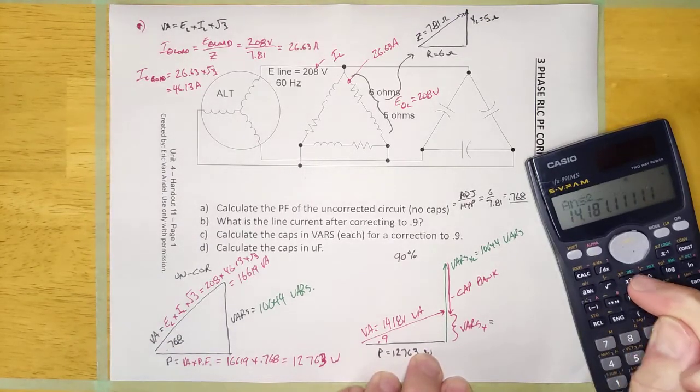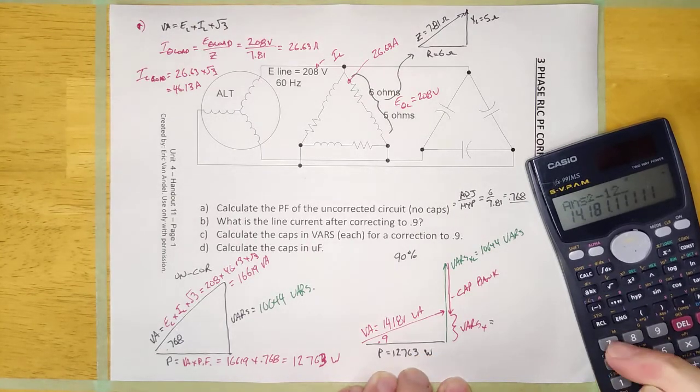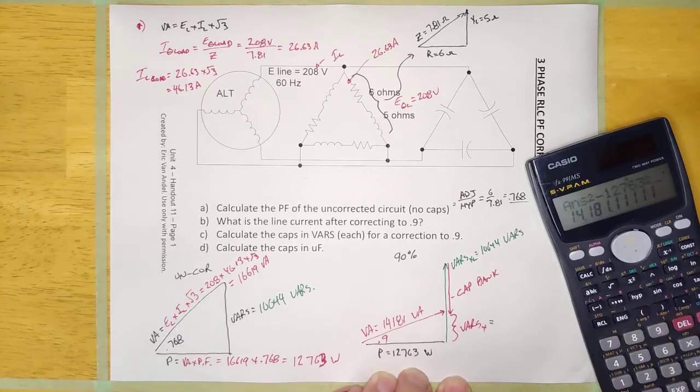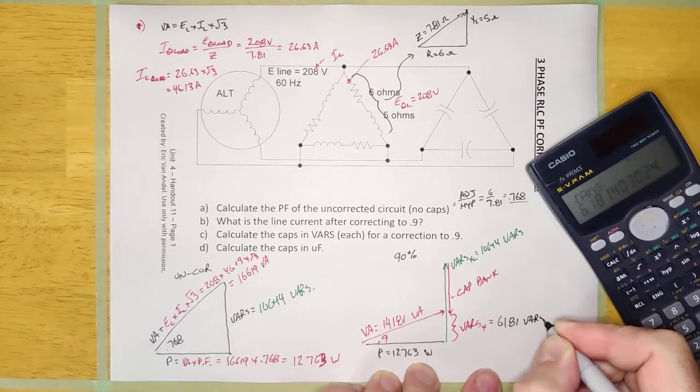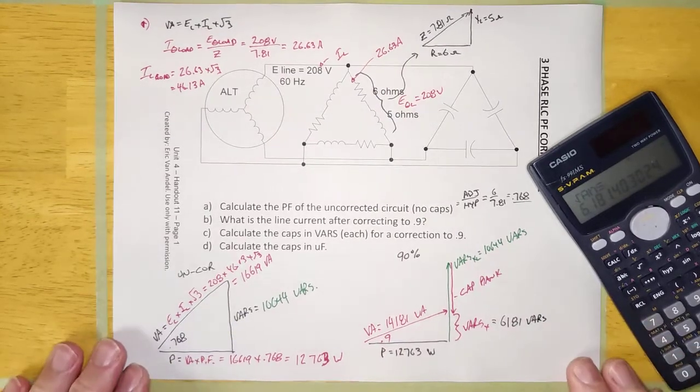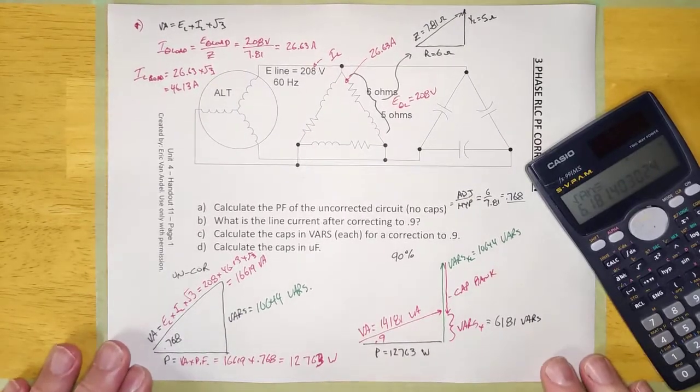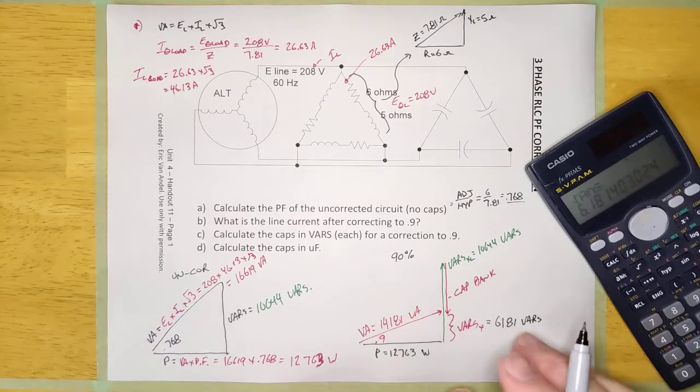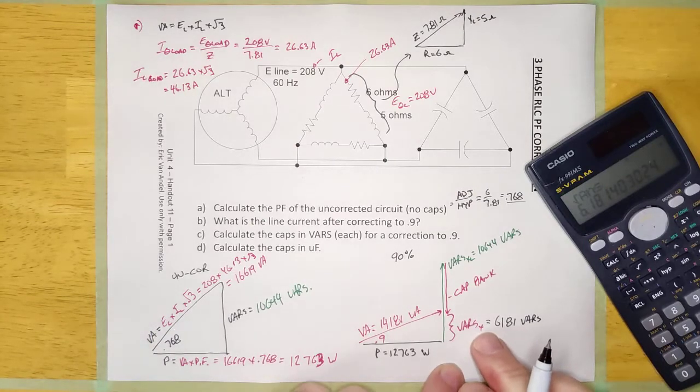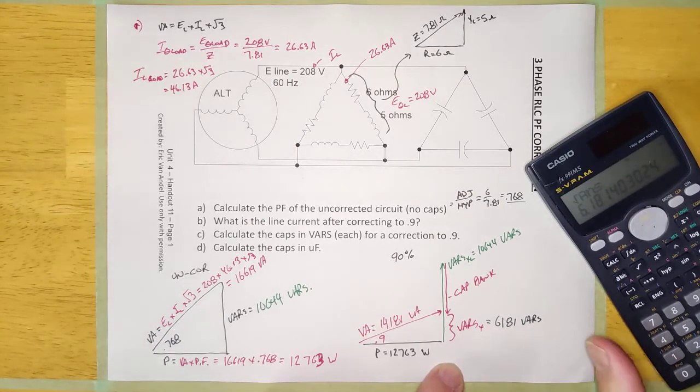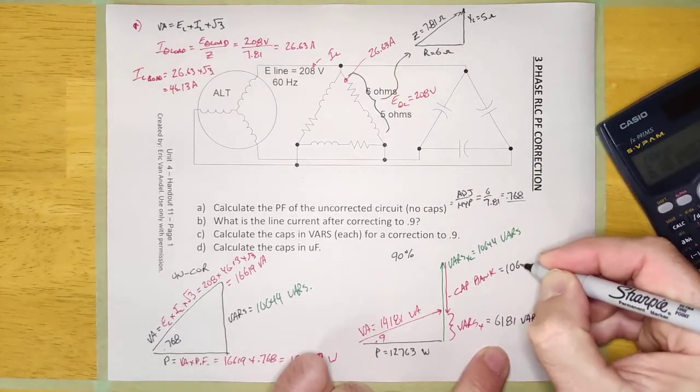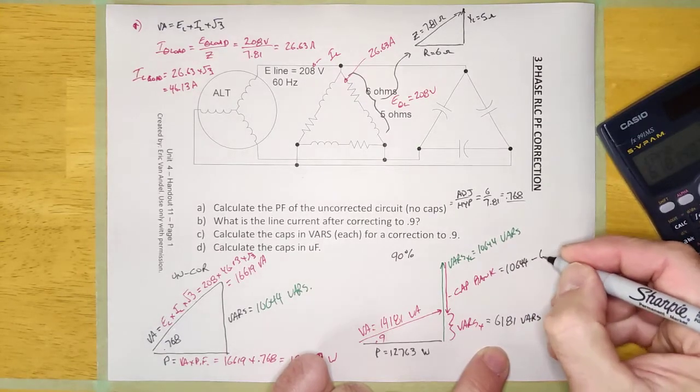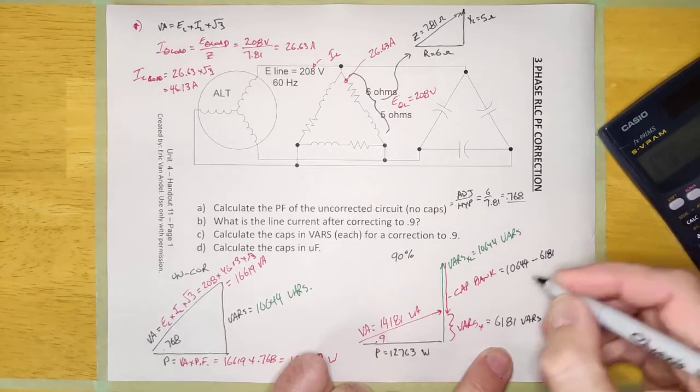So it's going to be that squared minus 12,763 squared equals root. And I know I'm going fast, guys. Pause the video, or you can slow it down. Hit the little gear icon and slow it down to 75% speed or something like that. That's not your capacitor bank. That's your VARS that you're going to live with in the circuit. And so my capacitor bank here is going to be the 10,644 that I started with minus the 6,181 that I'm going to live with.